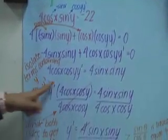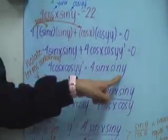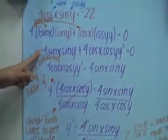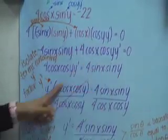Isolate terms containing y prime: 4cosxcosy y prime and then 4sinxsiny. Don't forget to change the sign when you move to the other side of the equation.